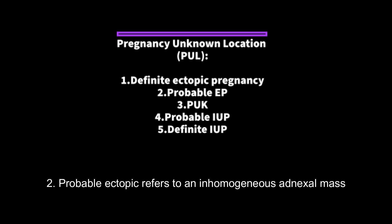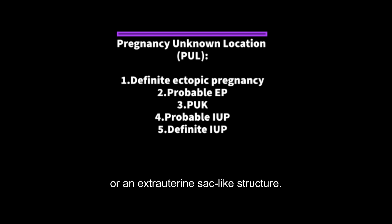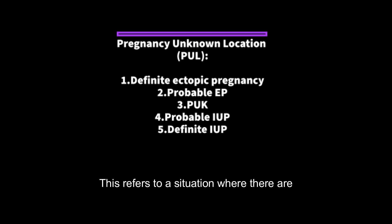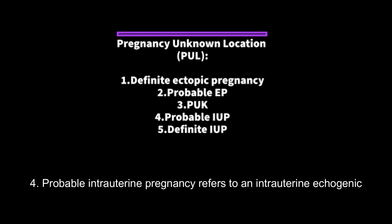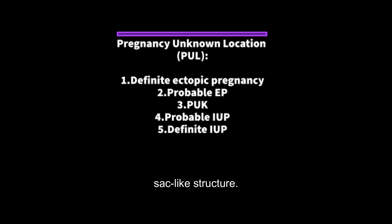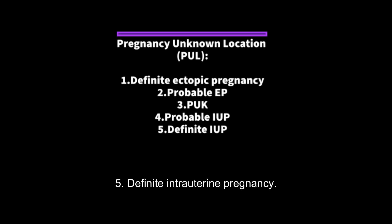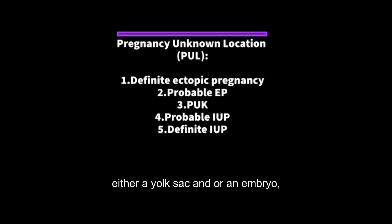2. Probable ectopic refers to an inhomogeneous adnexal mass or an extrauterine sac-like structure. 3. Pregnancy of Unknown Location — this refers to a situation where there are no signs of either an ectopic pregnancy or an intrauterine pregnancy. 4. Probable intrauterine pregnancy refers to an intrauterine echogenic sac-like structure. 5. Definite intrauterine pregnancy — this refers to an intrauterine gestational sac with either a yolk sac and/or an embryo, with or without cardiac activity.